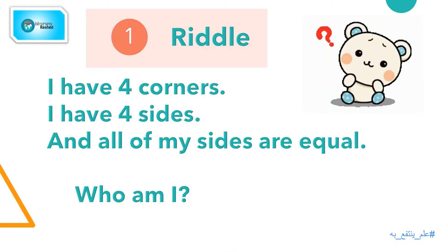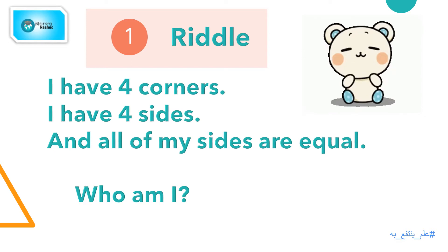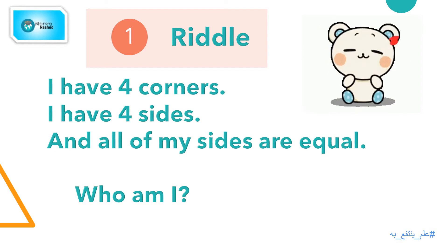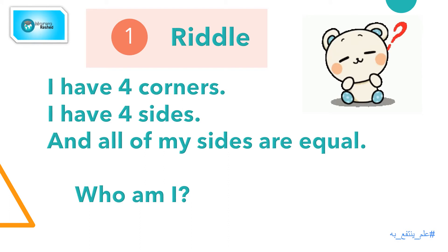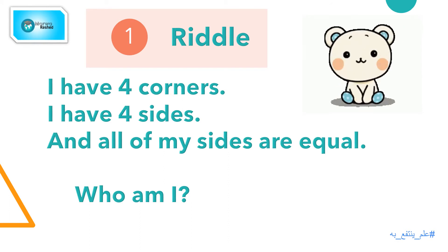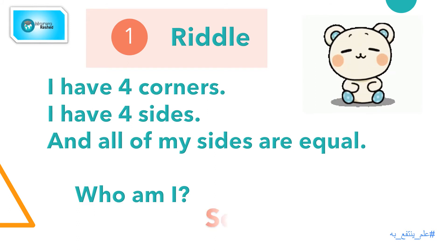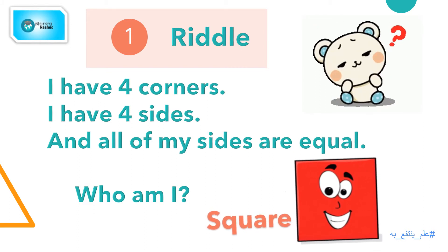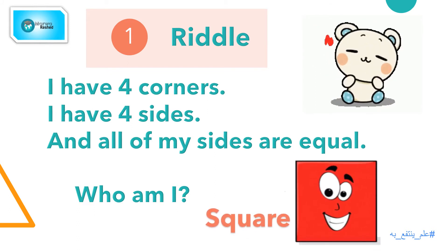Number 1. I have four corners. I have four sides. And all of my sides are equal. Who am I? Excellent! I am the square shape.